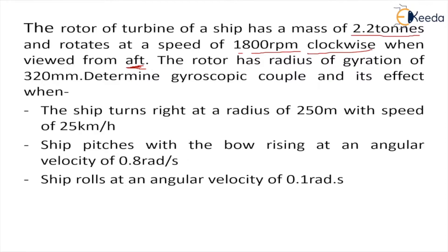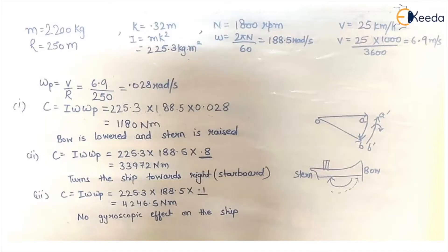The radius of gyration is given as 320 mm. We have to find the gyroscopic couple and its effect for three cases: when the ship turns right at a radius of 250 meters with a speed of 25 km/h; when there is pitching and the bow rises at an angular velocity of 0.8 radian per second; and when the ship rolls at an angular velocity of 0.1 radian per second.